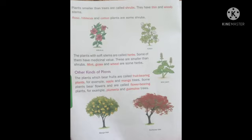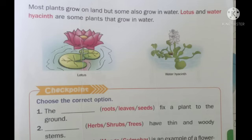Other kinds of plants: the plants which bear fruits are called fruit-bearing plants, for example apple and mango trees. Some plants bear flowers and are called flower-bearing plants, for example plumeria and gulmohar trees. Jo plants jin pe sirf phal agte hain un ko fruit-bearing plants kehte hain, aur jin mein sirf phool khilte hain un ko flower-bearing plants kehte hain.